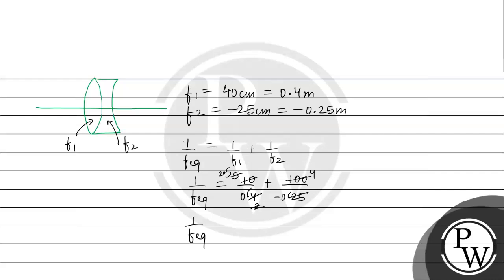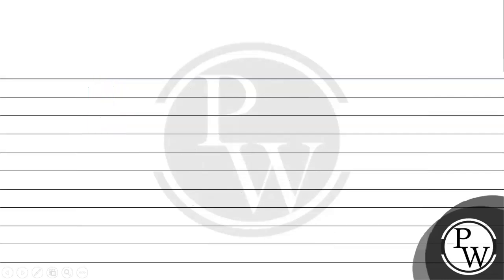So 1 by F equivalent will become 2.5 minus 4 which is minus 1.5. So the equivalent power, that is also 1 by F equivalent, the equivalent power you have got is minus 1.5 diopter.